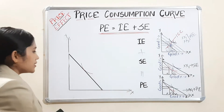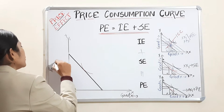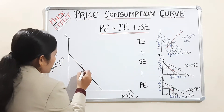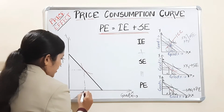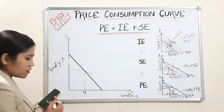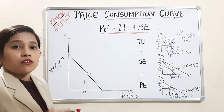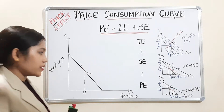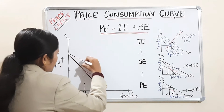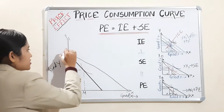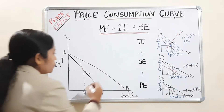On the X-axis we take good X, and on the Y-axis we take good Y. Here is our equilibrium point M — that means we are currently at this position. Now, suppose the price of good X has decreased. A decrease in the price of good X means we can purchase more of good X, because our purchasing power has increased. Therefore, our budget line will rotate outward. This new budget line is A-B — initially it was A-A, now it is A-B.